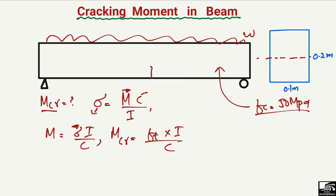What we did here is replace the bending stress with the tensile strength of the concrete, because if we reach the tensile strength of the concrete, the first crack will start at that moment — which is why it is called the cracking moment. So the key point is that we substitute the tensile strength into the stress value, and when the tensile strength is reached, the first crack occurs in the tension portion of the beam.